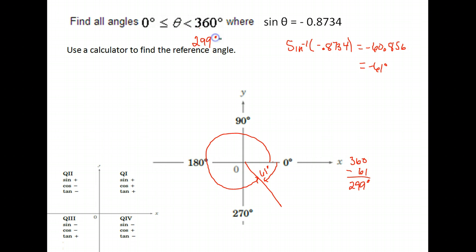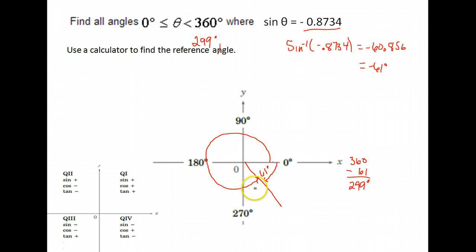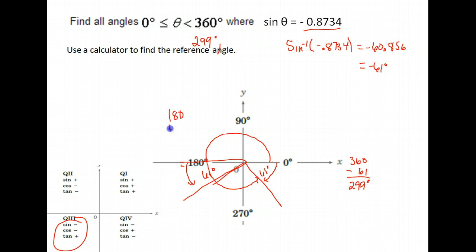Negative sine values will produce a fourth-quadrant result from your calculator, so you need to do a bit of adjusting. 299 degrees is our first angle. We want the other angle where sine is negative and 61 degrees from the x-axis. Sine is positive in the first and second quadrants, negative in the third and fourth. So we need the angle in the third quadrant — 180 plus 61 more degrees — which gives us 241 degrees. Our two answers are 299 and 241 degrees.